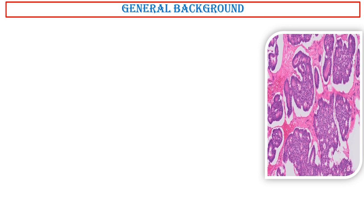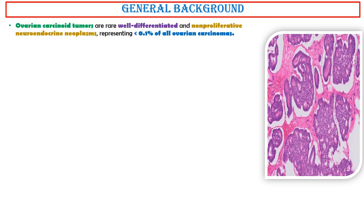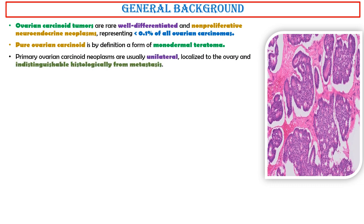Ovarian carcinoid tumors are rare, well-differentiated, and non-proliferative neuroendocrine neoplasms, representing less than 0.1% of all ovarian carcinomas. Pure ovarian carcinoid is, by definition, a form of monodermal teratoma. Primary ovarian carcinoid neoplasms are usually unilateral, localized to the ovary, and indistinguishable histologically from metastasis.